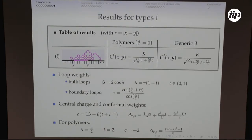For type F, this is the one dependent on the extra parameter tau. I parametrize tau in terms of a variable theta. For polymers, the conformal weight depends quadratically on theta, and for generic values of theta, the entries R and S are linear in this theta parameter. This is the general result we find using CFT.